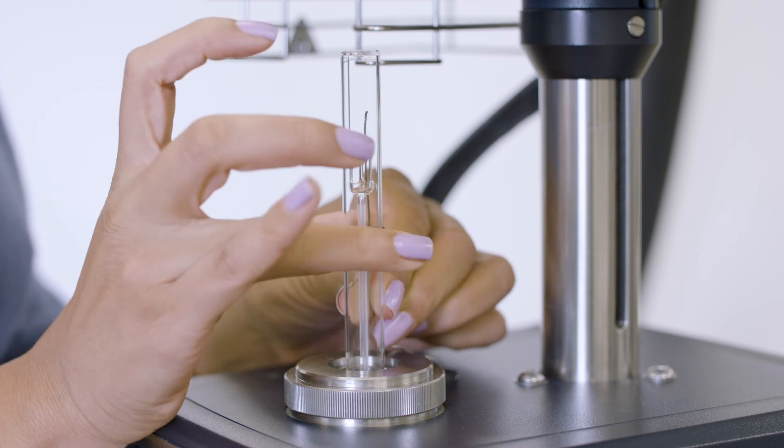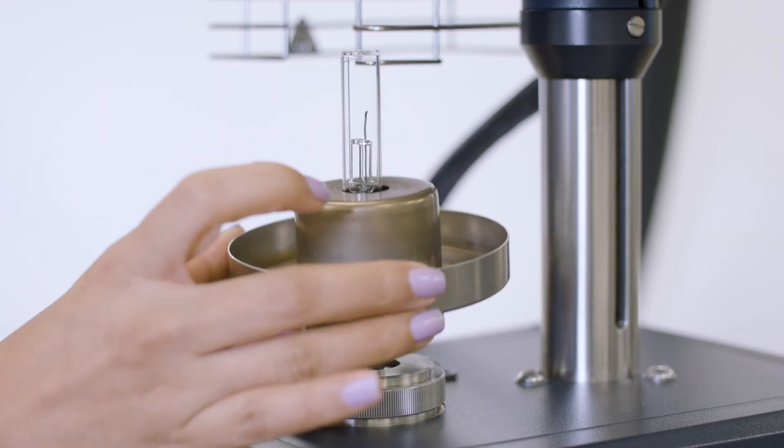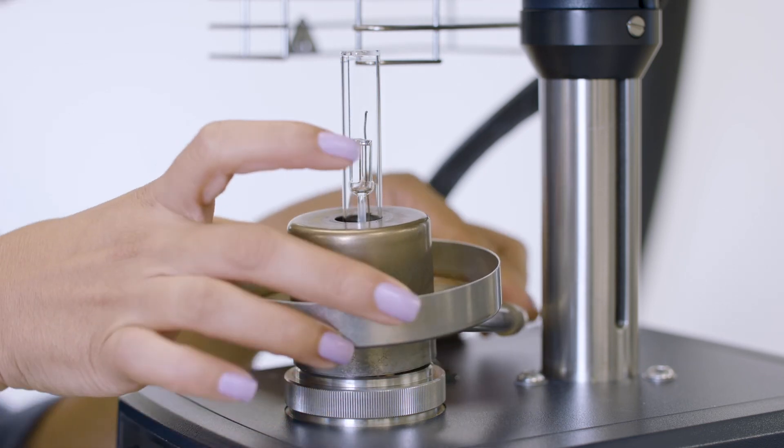Finally, place the stage shield or drain cup on the stage, aligning the slot in the bottom over the thermocouple.